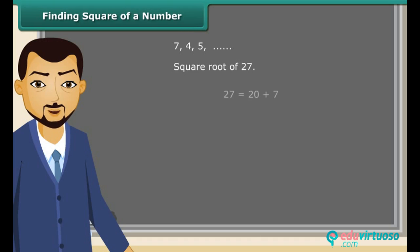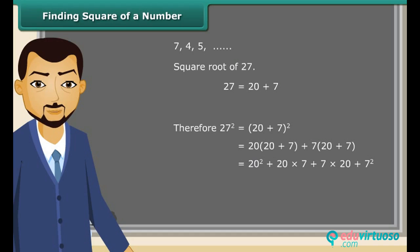We know 27 is a sum of 20 and 7. Therefore, a square of 27 is equal to (20 plus 7) whole square, which equals 20 square plus 20 into 7 plus 7 into 20 plus 7 square, which equals 400 plus 140 plus 140 plus 49, which equals 729.